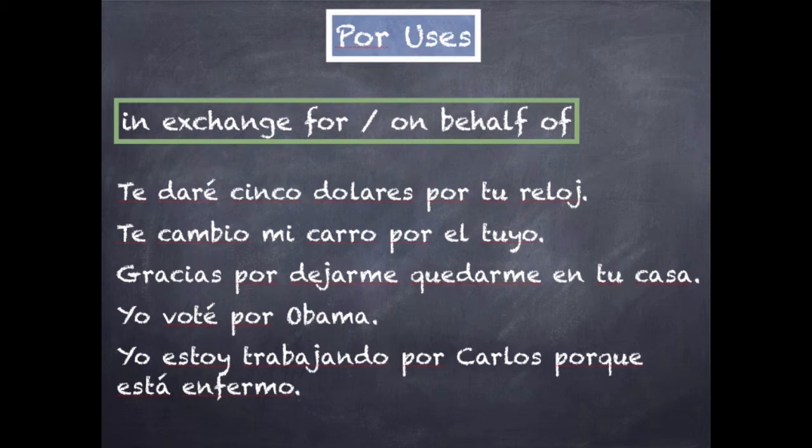We're going to learn about por and para. Now both of these can mean 'for' in English, and they can also mean a bunch of other prepositions and words that don't necessarily translate to the word 'for.' There are a lot of rules for them, so we're going to go through some of the rules. For some learning styles, you'll want to memorize the rules; for others, you'll just see a bunch of examples and start to become more comfortable with using both of these words. It's really up to you.